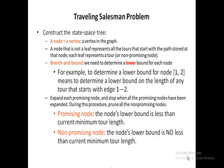We expand each promising node and stop when all promising nodes have been expanded. During this procedure, we prune all non-promising nodes. A node is promising if its lower bound is less than the current minimum tour length.